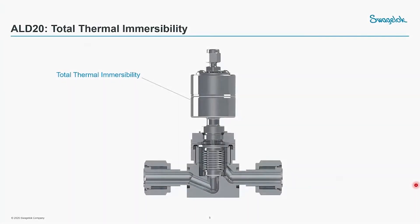Today's ALD process demands high temperature throughout the valve to prevent low vapor pressure gas — LVP gas — from solidifying. What is happening is you want the gas passing through the wetted areas to stay in the same gaseous state. You don't want it to solidify. Let me show you something in the next slide.